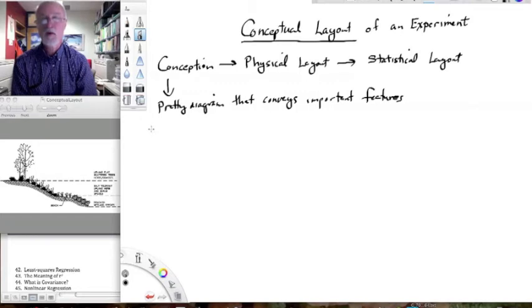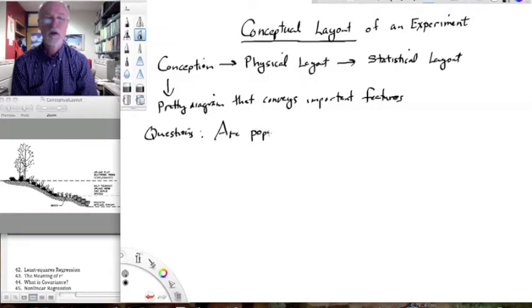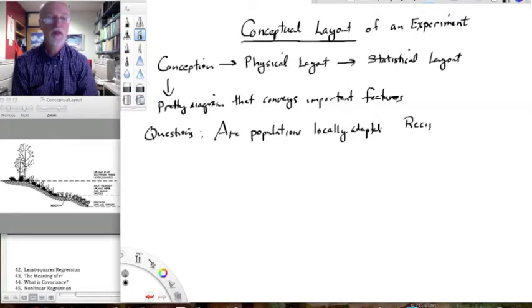So, we've talked about questions in ecology quite a bit. I'll talk about this one again. This is one we've actually mentioned before. Are populations locally adapted? And of course, the way we look at this is with the classical reciprocal transplant experiment.